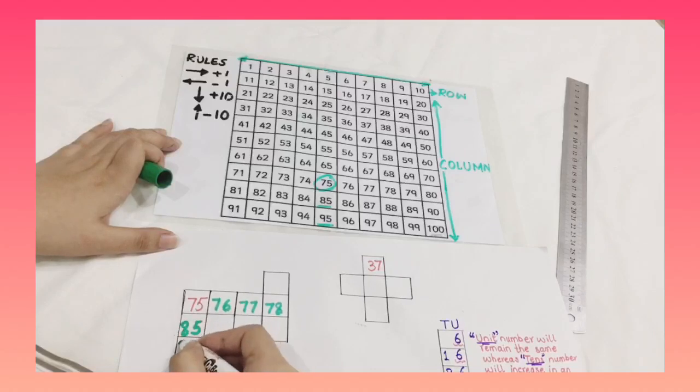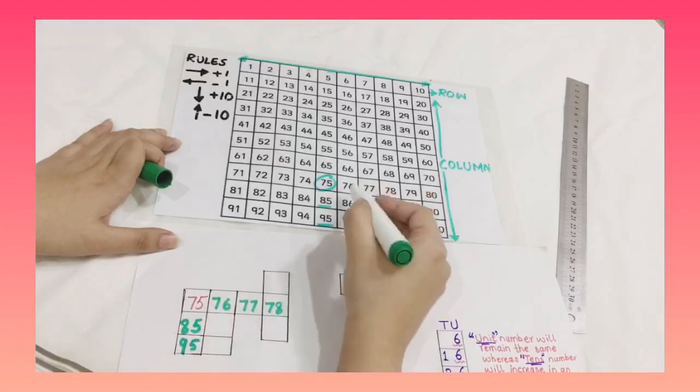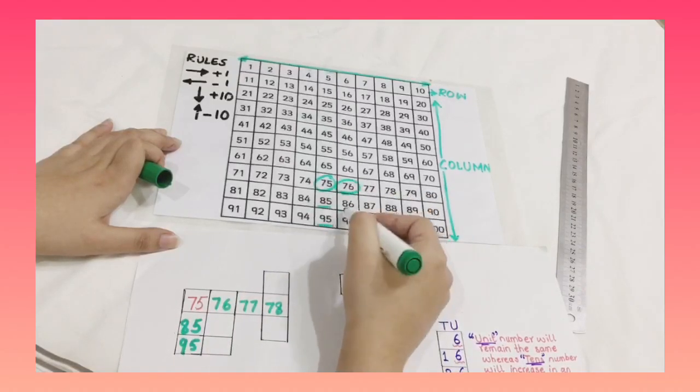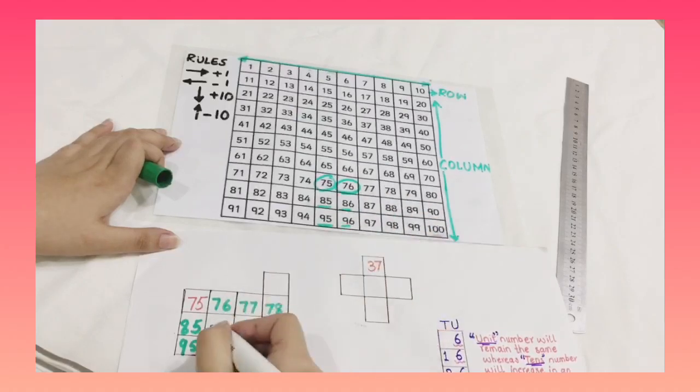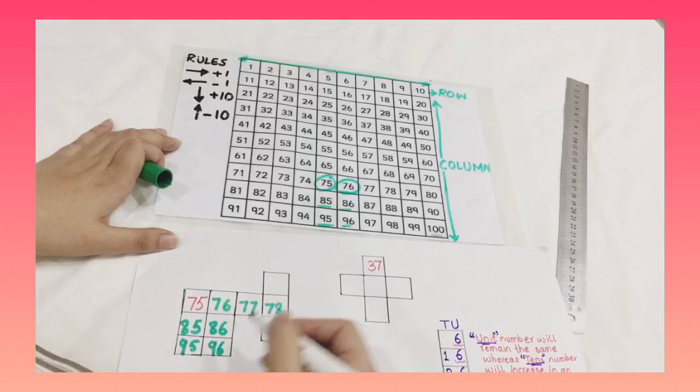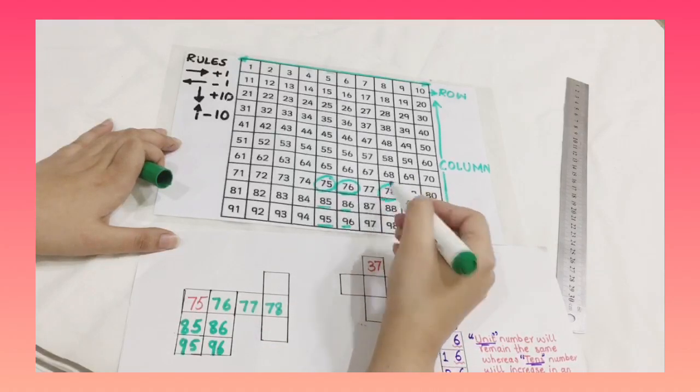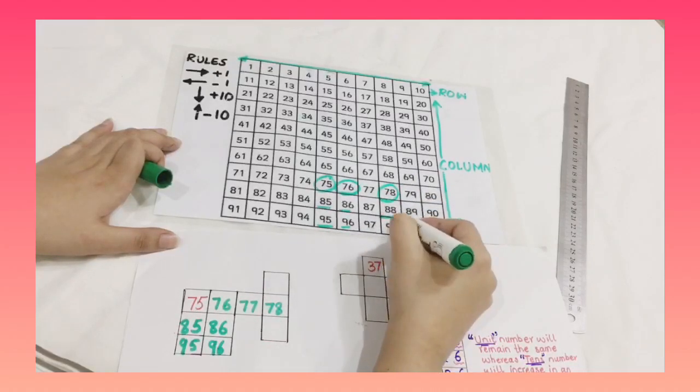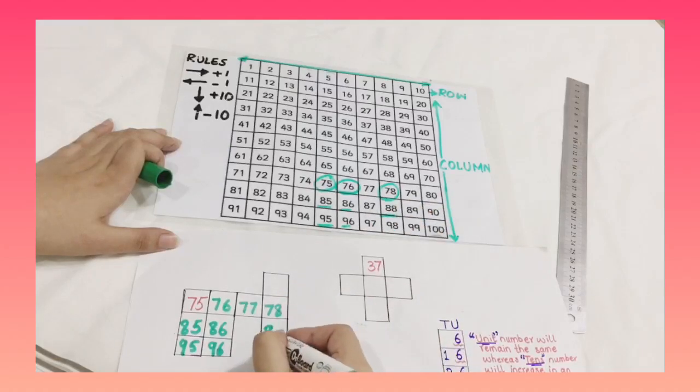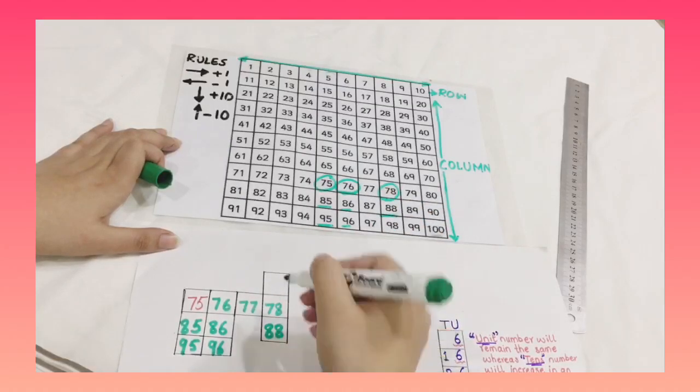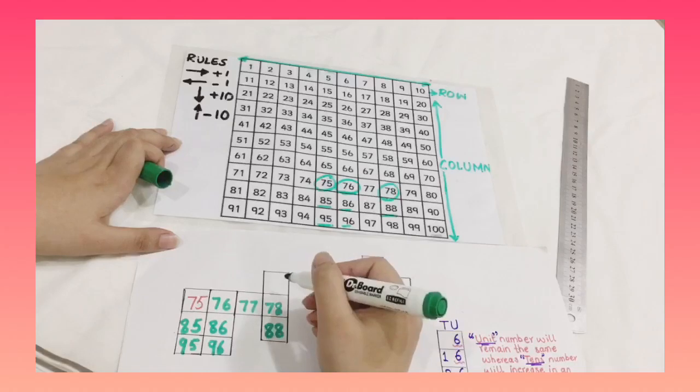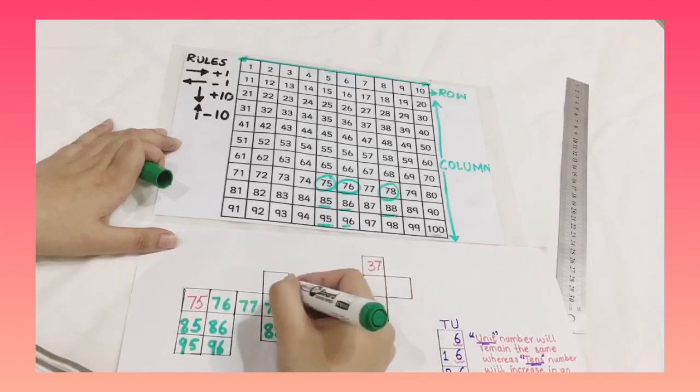And 85 and this is 95. Similarly 76, 86 and 96. Now this is 78. Below it is 88, because it is increasing. But as I move up the number will decrease. So that means this will be 68.